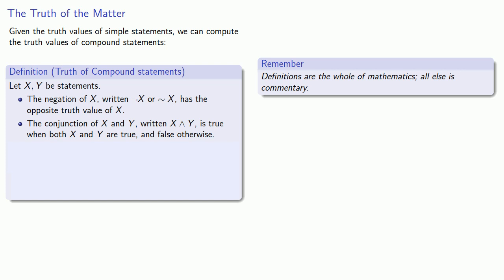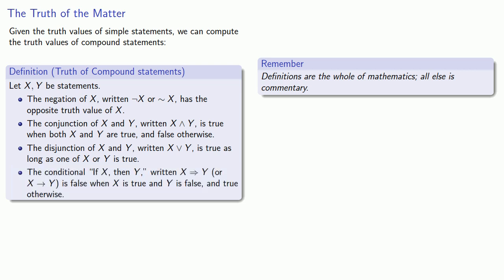The disjunction of x and y, written this way, is true as long as one of x or y is true. And the conditional — if x then y — written one of two ways, is false when x is true and y is false, and true otherwise.